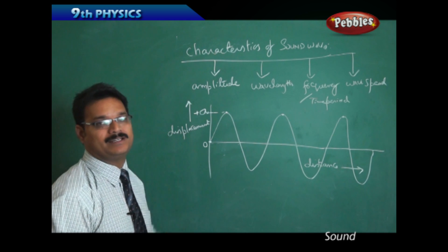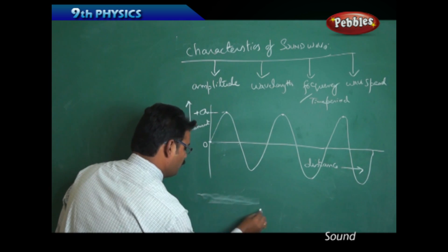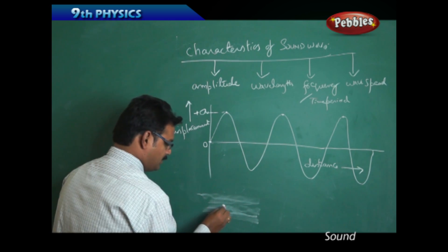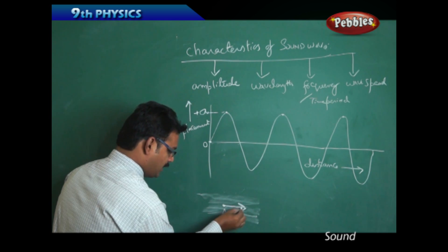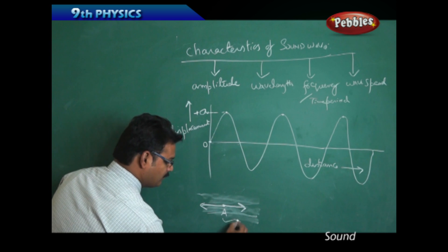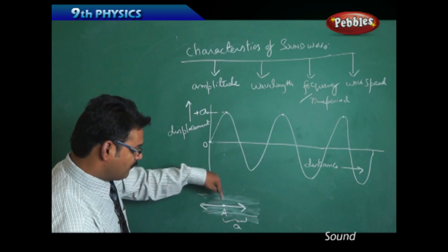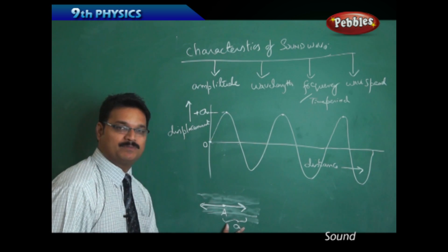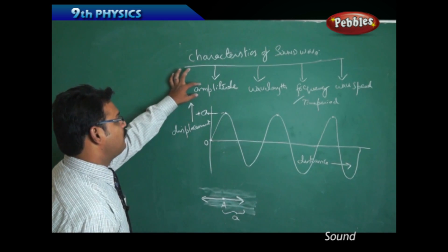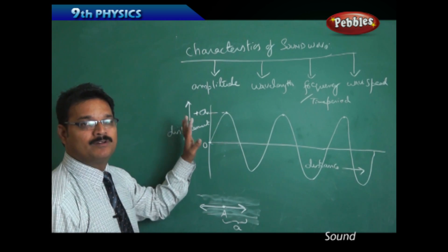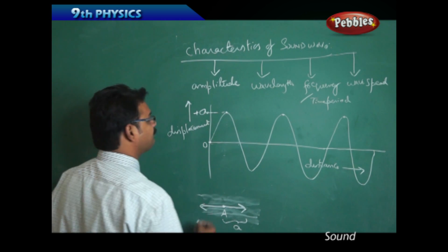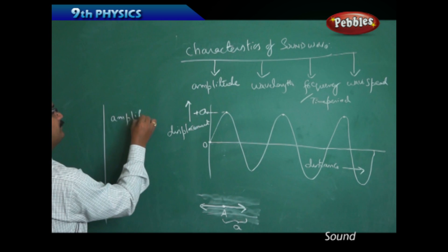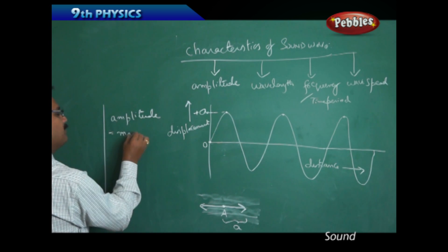Amplitude is the maximum displacement of the particle in the medium. When sound is produced, the particle vibrates from one extreme point and comes back and goes to the other extreme point. From mean position to extreme position, this is maximum displacement — it's called amplitude. Amplitude means the maximum displacement of the particle in a wave or in the medium.